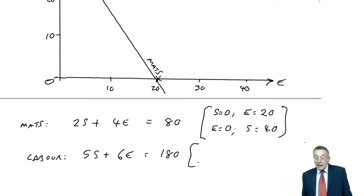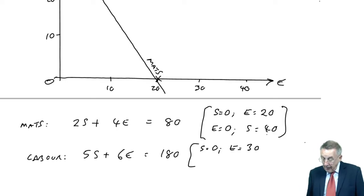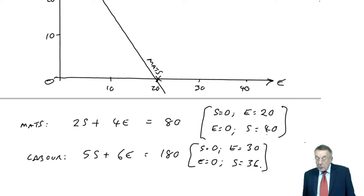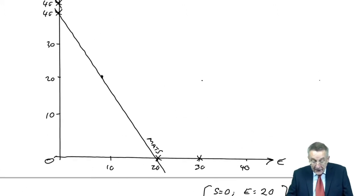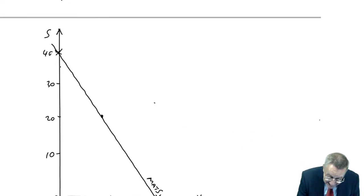And again, we draw the graph of equality when it was equal to 180. And again, two points fix a line. When S equals 0, 6E is 180, so E equals 30. When E equals 0, 5S is 180, so S would be 36. So let's put those two points on the line. S 0, E 30 is there. E 0, S 36 is there.